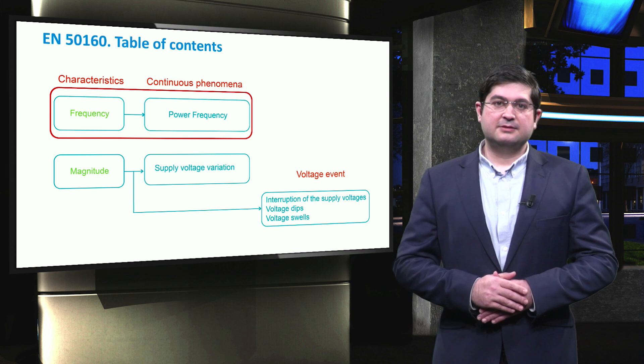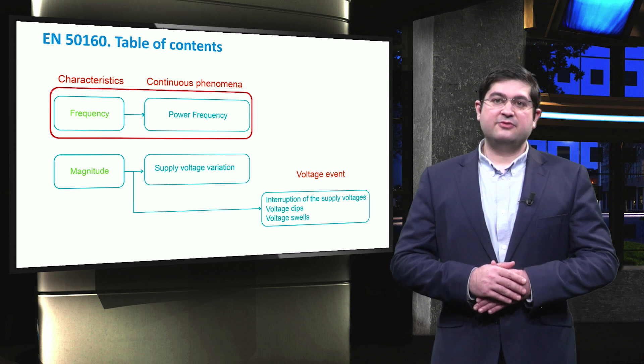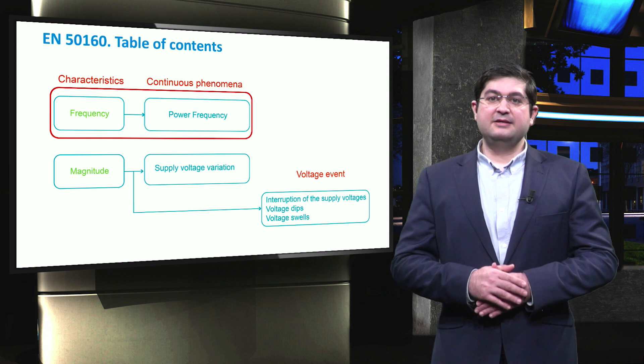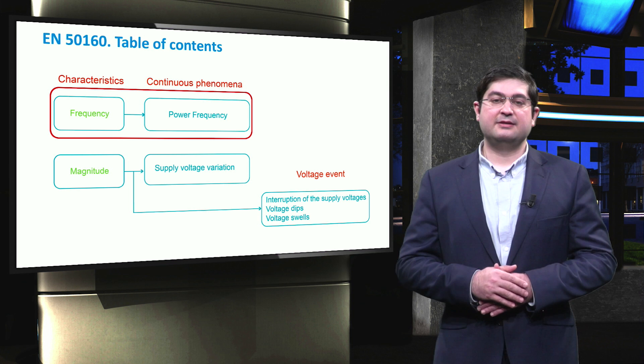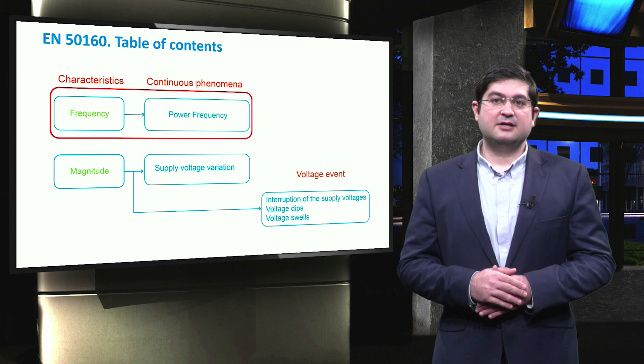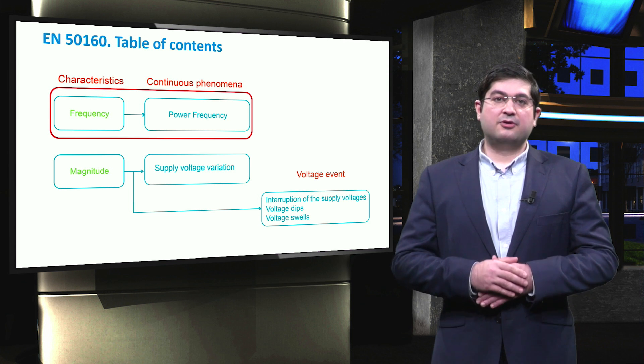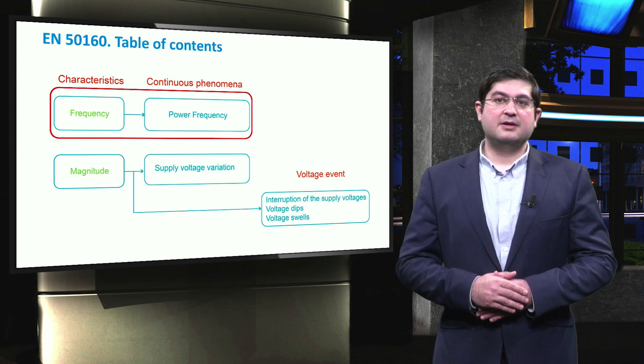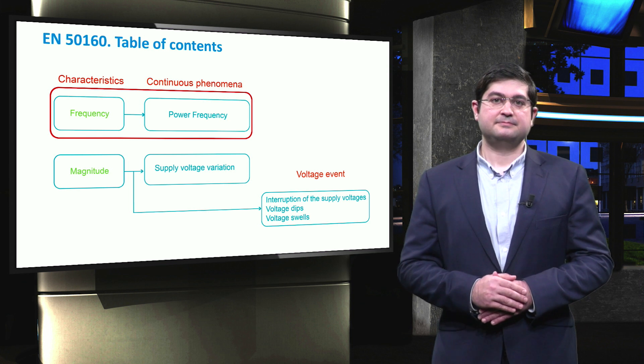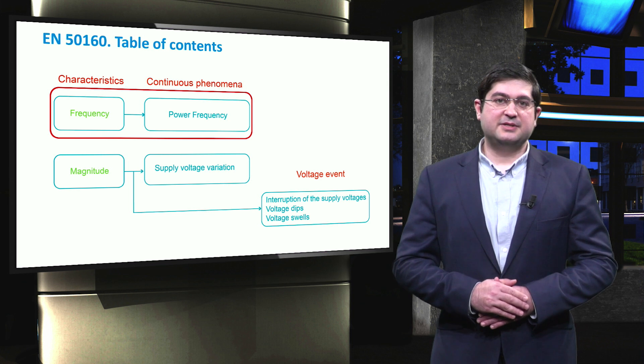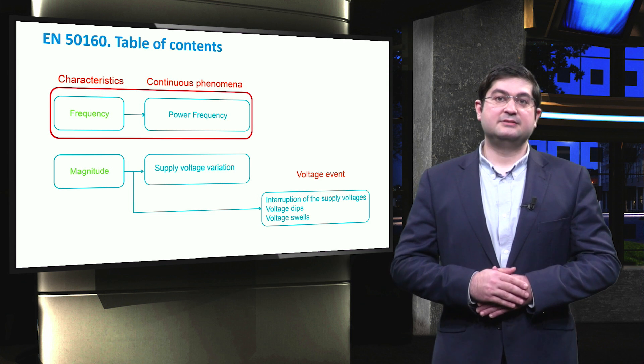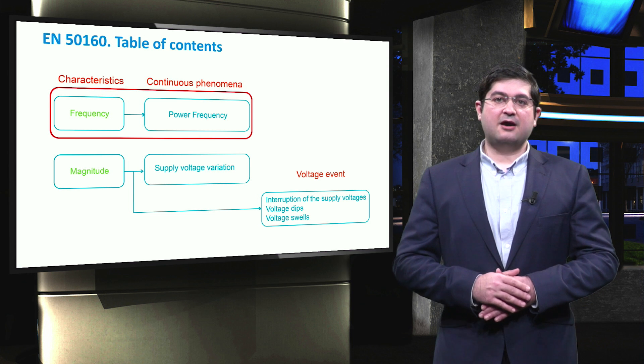According to the standard, the rated frequency is 50 Hz. In an interconnected system, the maximum allowed frequency deviation is 1% of the rated value of frequency for 95% of the time on a weekly basis, and plus 4% and minus 6% for 100% of the time.